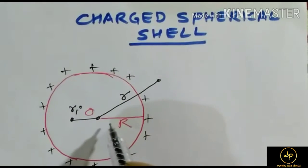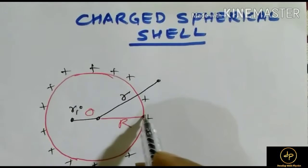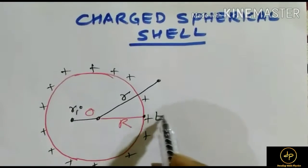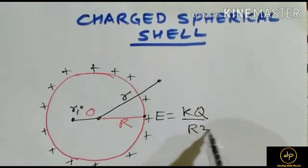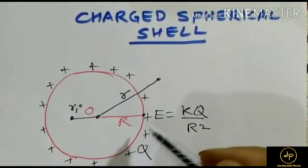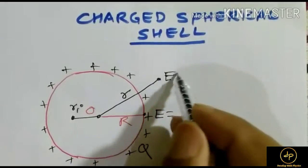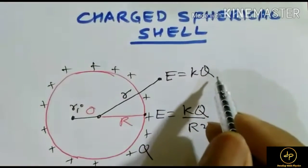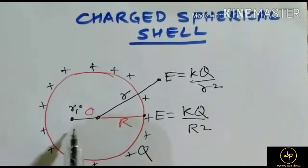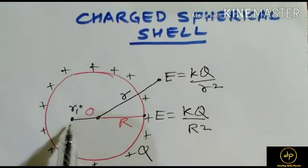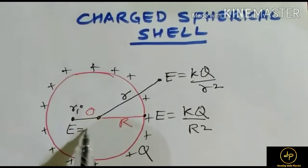We know that at the surface of this charged shell, the electric field is kQ/R². At a point outside, the field is kQ/r². At a point inside, the field is zero.